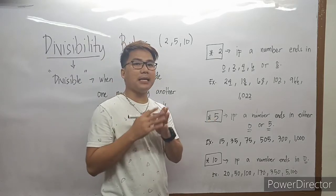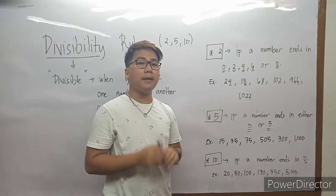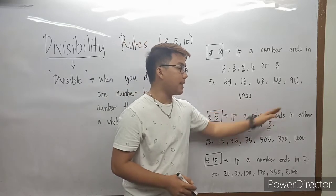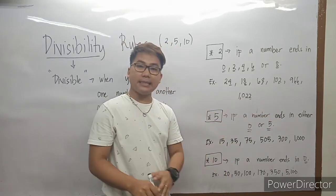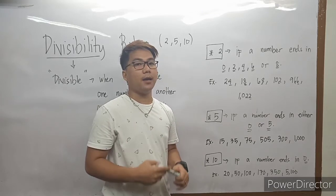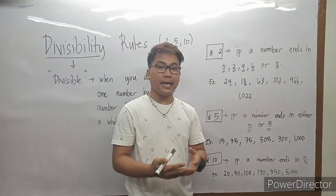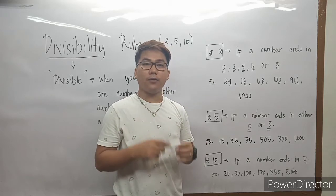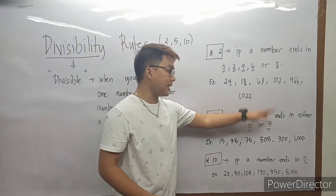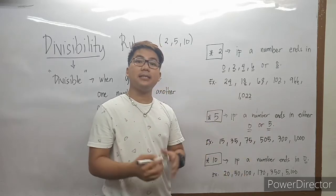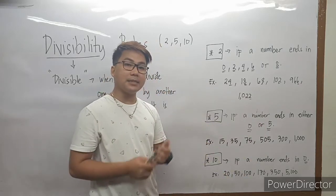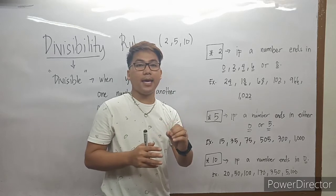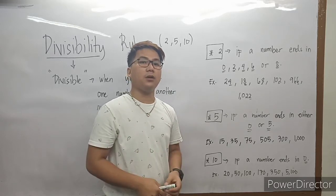Next — 5 naman. Paano ba natin malalaman kung yung number na yun ay divisible by 5? Madali lang naman dito. So, sabi dito sa 5: if a number ends in either 0 or 5, automatic yung number na yun ay divisible by 5. Kapag ang number natin ay nagtatapos sa 5 or 0, automatic divisible by 5. Titignan natin yung mga last digit ng number — tignan natin kung nagtatapos ba sa 0 or 5 para masabi nating divisible by 5.